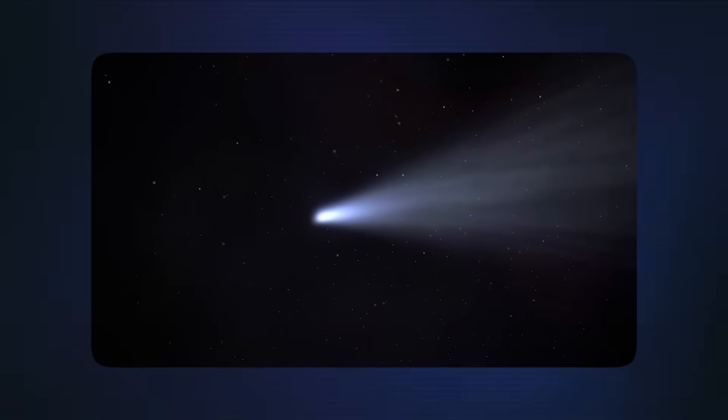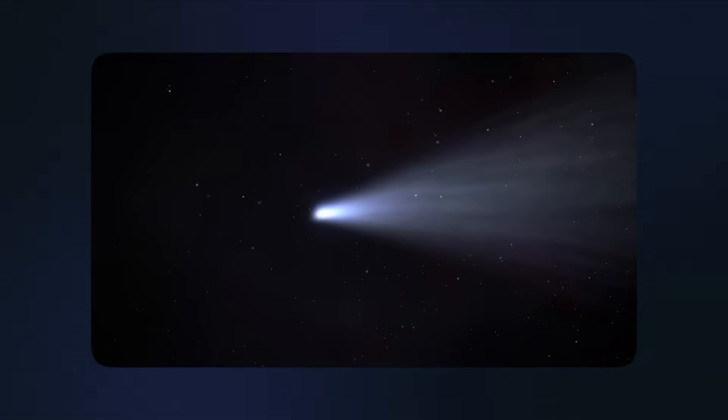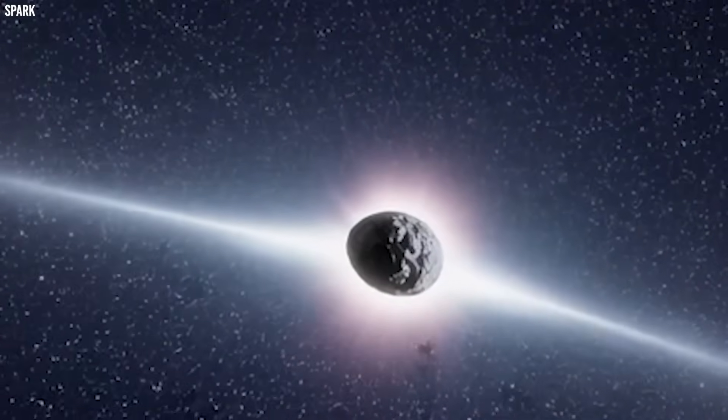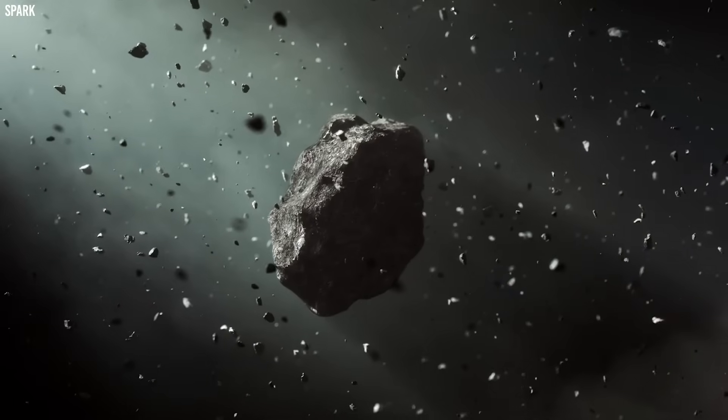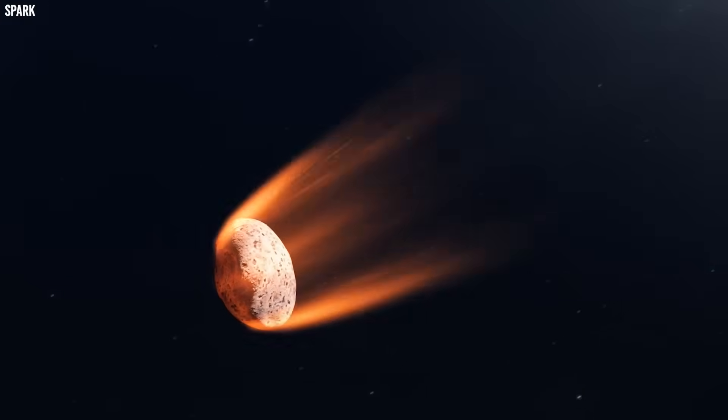This gas carries along dust particles, creating the fuzzy, fan-shaped tails that spread out and become increasingly diffuse the farther they extend from the comet's nucleus. The whole process is chaotic and turbulent, driven by the irregular shape and rotation of the comet itself.